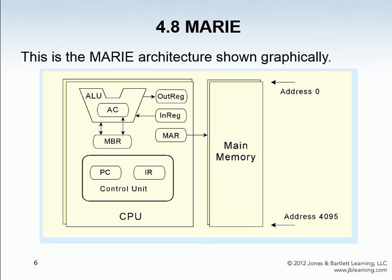This is a graphical representation of what it looks like. In our CPU, we have the arithmetic logic unit that contains the accumulator (AC) and the memory buffer register. Data is going in and out to the accumulator and the ALU. There's an out register sending data to the screen, and the in-register brings things in from the keyboard. The memory address register goes out to main memory, gets something at an address, and puts it in the memory buffer register. The program counter and instruction register are in the control unit — the program counter keeps track of the next instruction, and the instruction register holds the address of the instruction right before it's executed.